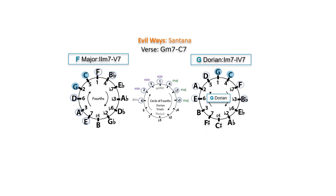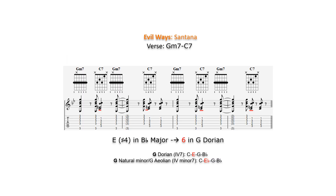In Evil Ways by Santana, G minor 7 and C7 is a 2-5 in F major, and a 1 minor 7 to 4 dominant 7 in G Dorian, the 2nd mode of F major. The relative major of G natural minor is B flat major, with 2 flats — B flat and E flat — in its key signature. To relate this progression to G Dorian, we raise the 4th in B flat major from E flat to E natural, which becomes the 6th in G Dorian and the major 3rd in the C7 chord.